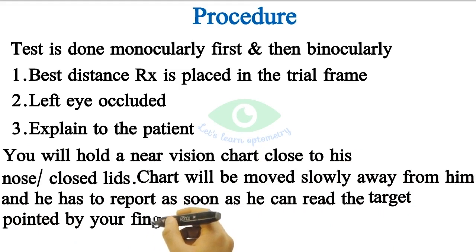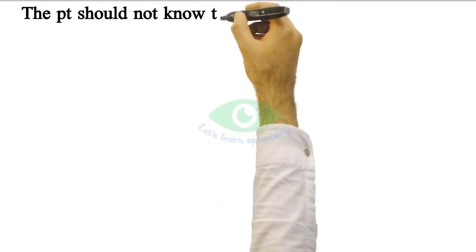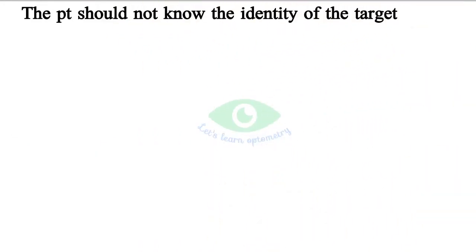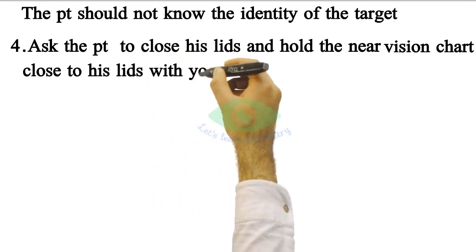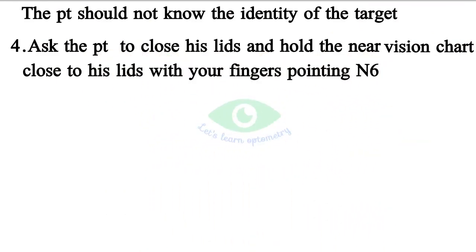After explaining to the patient, begin the procedure. The patient should not know the identity of the target before the procedure. Ask the patient to close the lips and hold the near vision chart close to his lips with your finger pointing to the N6 target.